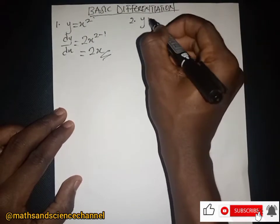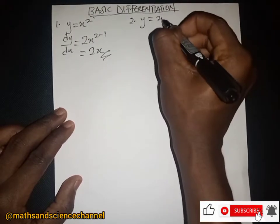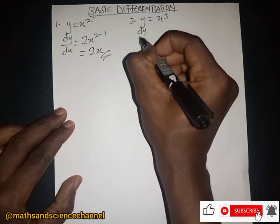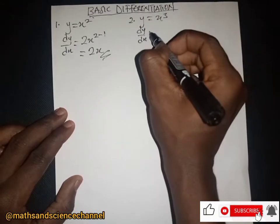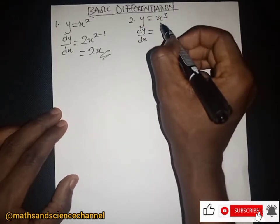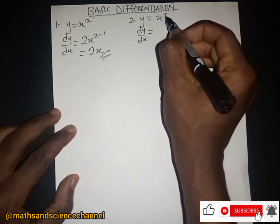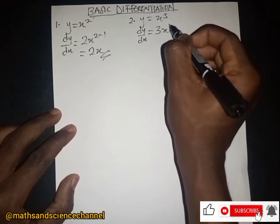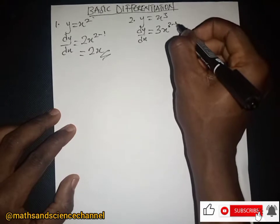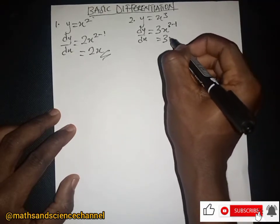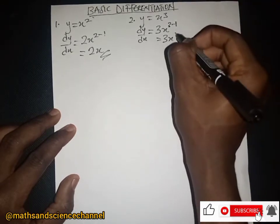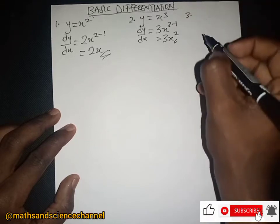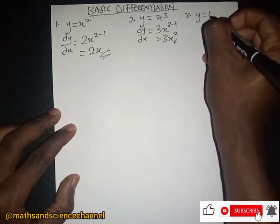Now let's look at the second one. If we have y equal to x cubed, we differentiate to get dy/dx. We drop the exponent down, subtract one from it, and we are just going to get 3x squared.